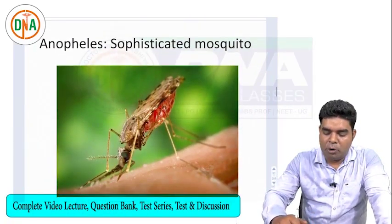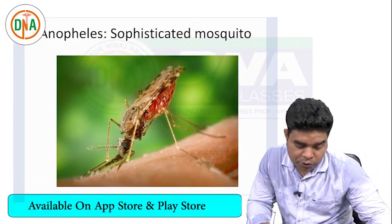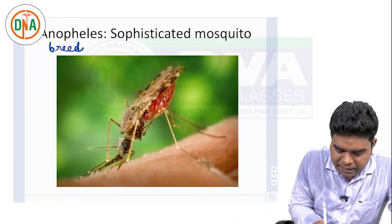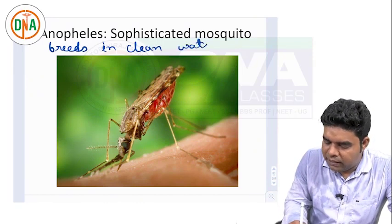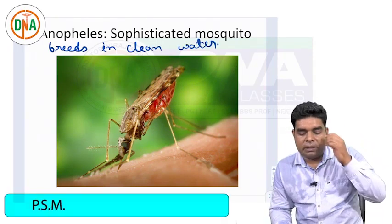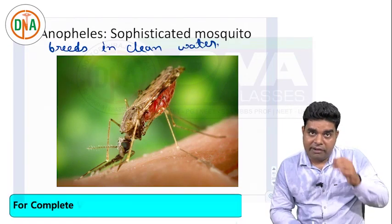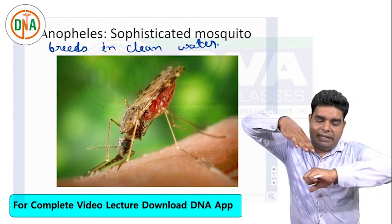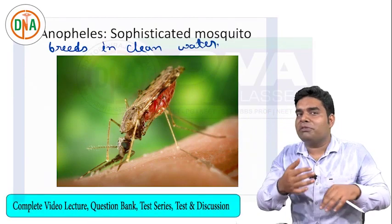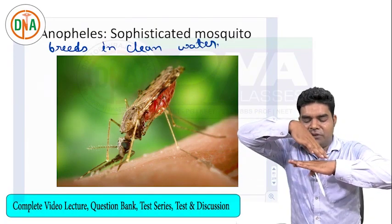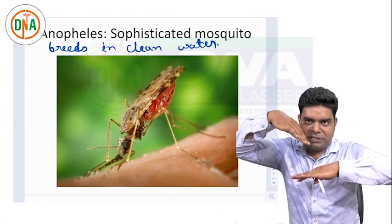After Aedes, the second mosquito to know is Anopheles, which is known as the Sophisticated Mosquito. Why? Because first, it breeds in clean water only — it doesn't like dirty water. Second, whenever Anopheles bites, it bites at an angle of 45 degrees. It is so sophisticated that it doesn't even want to touch human skin directly while biting.